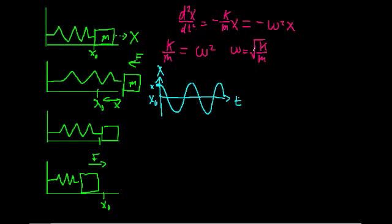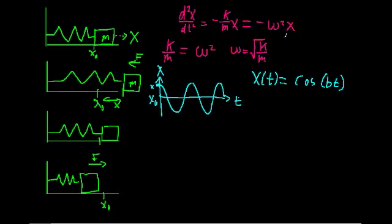Let's test it out. Let's say x of t is equal to cosine of bt, where b is an arbitrary frequency. We're going to plug this into the differential equation: plug x of t in on the right side, take the second derivative and plug it in on the left side, and see if they're equal.